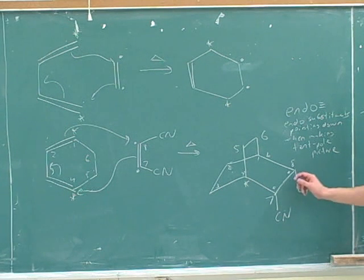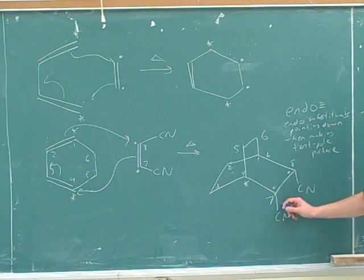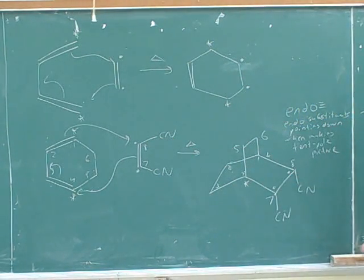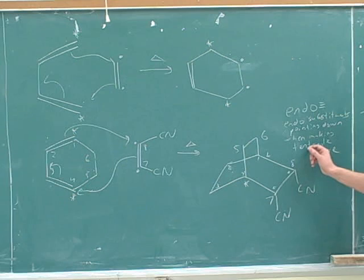If they said all possible products, then you could also draw the exo, which is when the cyanides are pointing up. They definitely both have to be pointing in the same direction. Since they started cis, they're going to stay cis. The Diels-Alder reaction preserves stereochemistry like that. So they're either both up or both down. Well, in the exo, they would both be up. In the endo, they're both down.